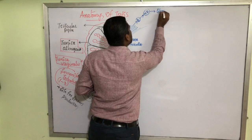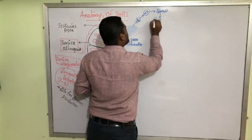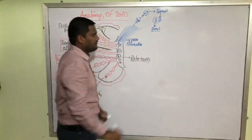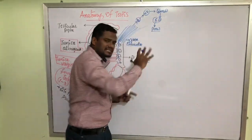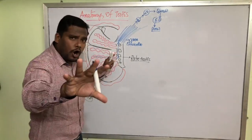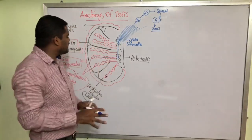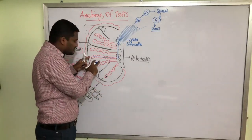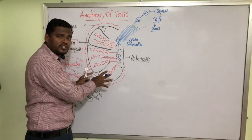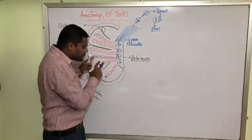The sperms come from the seminiferous tubules to the rete testis and from the rete testis they are carried through fine ducts called vasa efferentia. This part we will discuss in our next video. We are concentrated only on the anatomy of the testes - the internal characteristic features. The anatomy of the testes consists of compartments called testicular lobules, inside which we have tube-like structures called seminiferous tubules in which sperm production takes place.